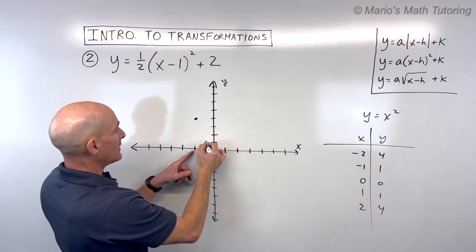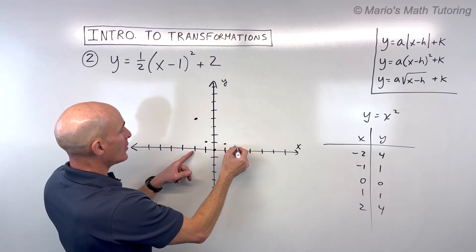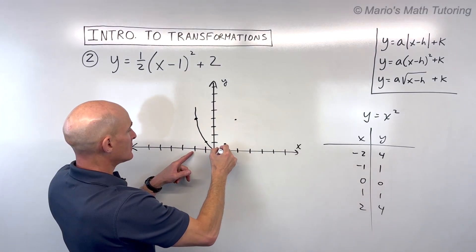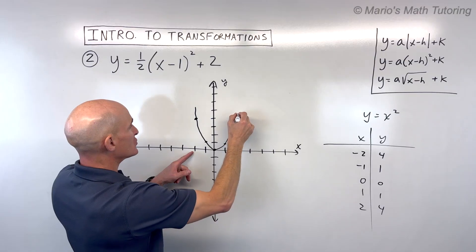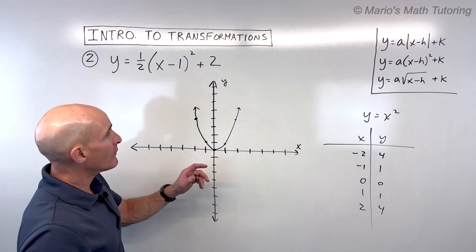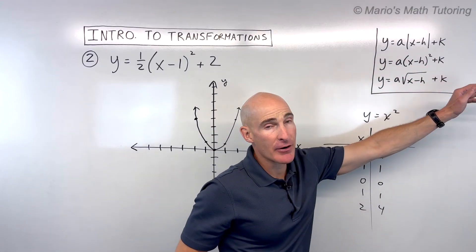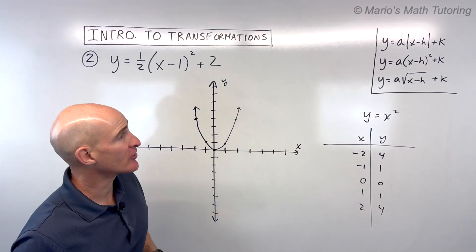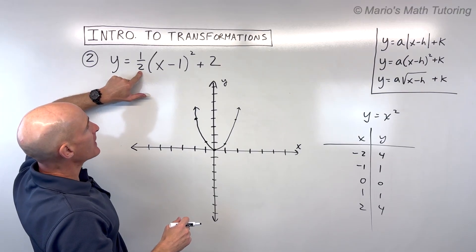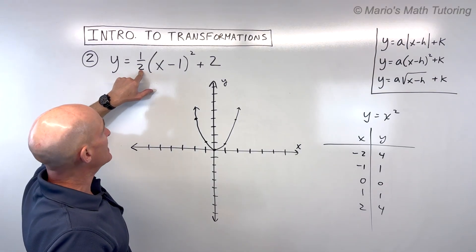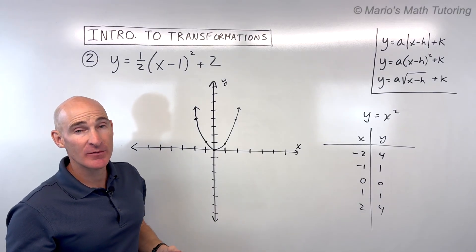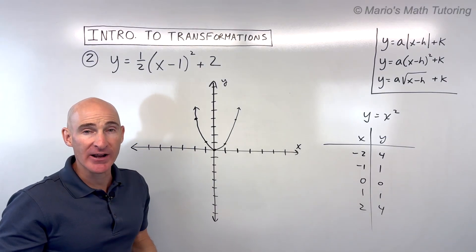Negative two, four; negative one, one; zero, zero; one, one; two, four. So there's our U-shaped parabola, our parent function. Following that left to right pattern, let's look at the a value of one half. It's not grouped with the x, so it's going to affect the y values — making all the y values half as much. This is a vertical shrink. Four times half is two, one times half is a half, half of zero is zero. You can see it's squeezing towards the x-axis.